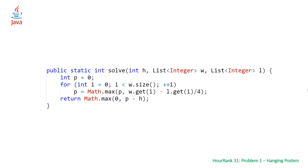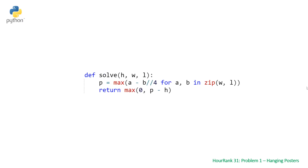Last but not least is our Python solution, which is the most beautiful of all. It makes great use of the zip function, which enables you to take two different lists and zip them together, then use destructuring to get two elements at a time. You can set P in one line by taking the max over each pair (a, b) from W and L of (a - b // 4), and then return the maximum of 0 and P minus H.